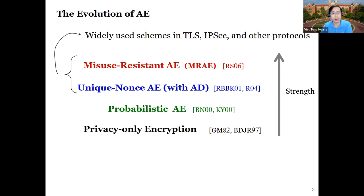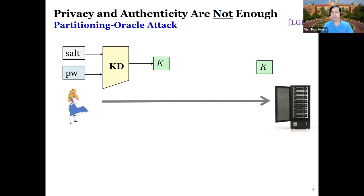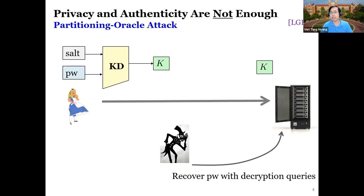Still, despite the huge volume of AE works, essentially everything falls under the umbrella of privacy and authenticity, and there has been a long-held belief that these notions are enough for practical purposes. Surprisingly, in a recent attack known as the partitioning oracle attack, Len, Grubbs, and Ristenpart shatter this common belief. They demonstrate a break of standard encryption schemes in the context of password-based encryption, where the adversary tries to exploit a server as a decryption oracle to recover passwords.